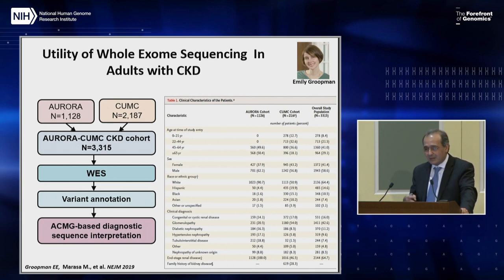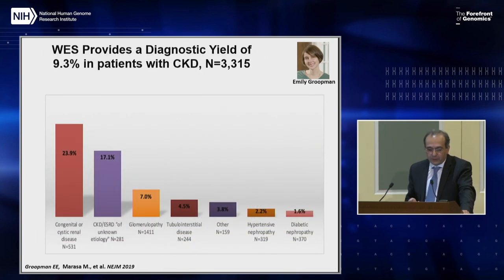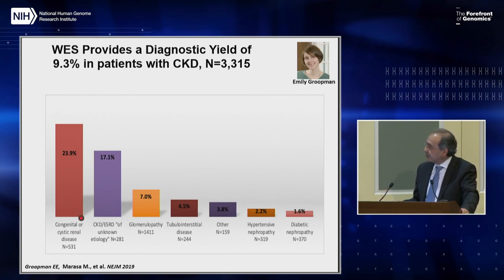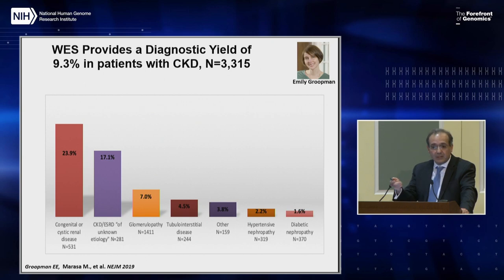We included patients in different clinical categories: congenital or cystic diseases, glomerulopathy, diabetic nephropathy, hypertensive nephropathy, tubulointerstitial diseases, and CKD of unknown cause — which represents 5 to 15% of CKD patients depending on the series. These patients show up too late and no diagnostic test is revealing. This was published earlier this year in the New England Journal of Medicine. The overall diagnostic rate was about 9%, but it varied significantly by clinical category. The highest was about 25% in congenital or cystic kidney disease. Diabetic and hypertensive nephropathy had a diagnostic rate for Mendelian disease of about 1 to 2%, confirming that clinical evaluation by a nephrologist is really important before ordering sequencing.